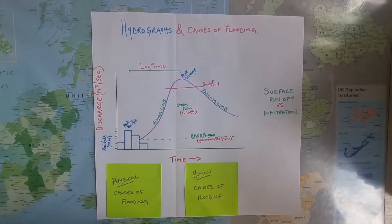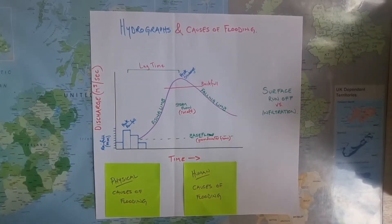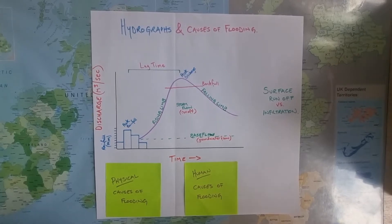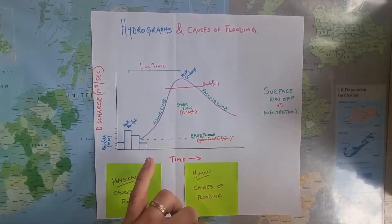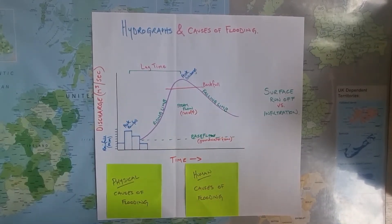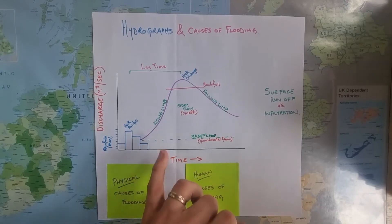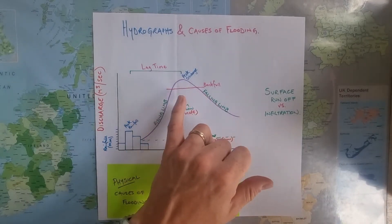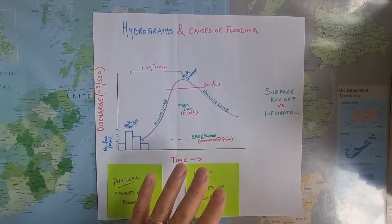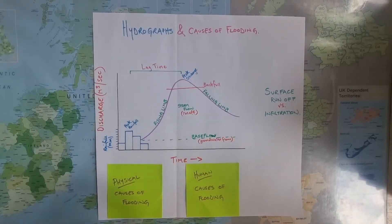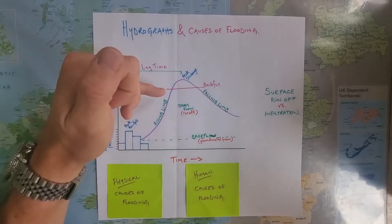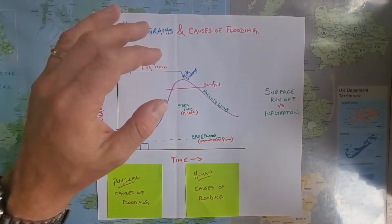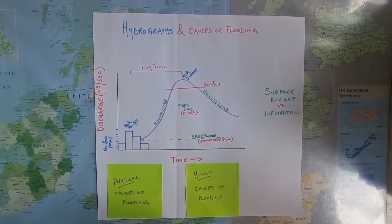Now that we understand the ideas of a hydrograph, we can start to think about some of the causes of flooding — things that will affect the shape of the river's response following the storm. If the peak discharge gets high enough, a flood will happen. Anything above the bankfull level might cause a flood, because in this scenario there is no capacity left in the river — this is the point at which the river channel is full. Anything above there becomes floodwater that spreads out either side of the river channel.